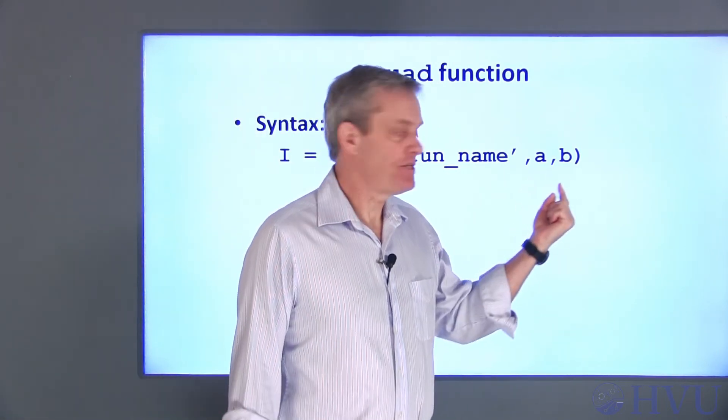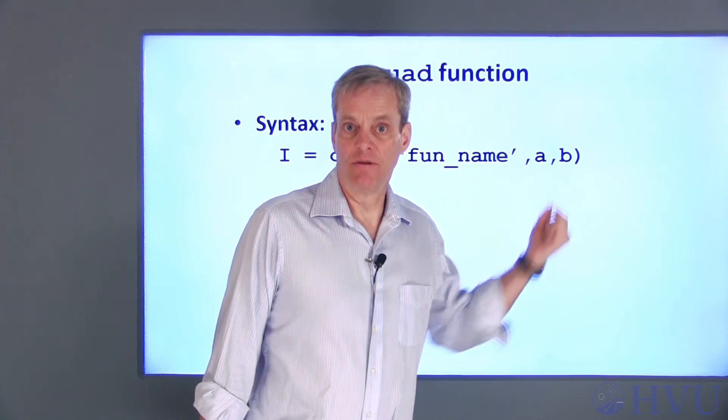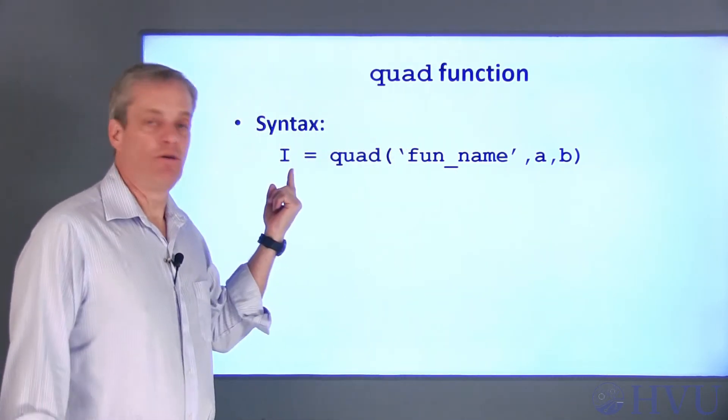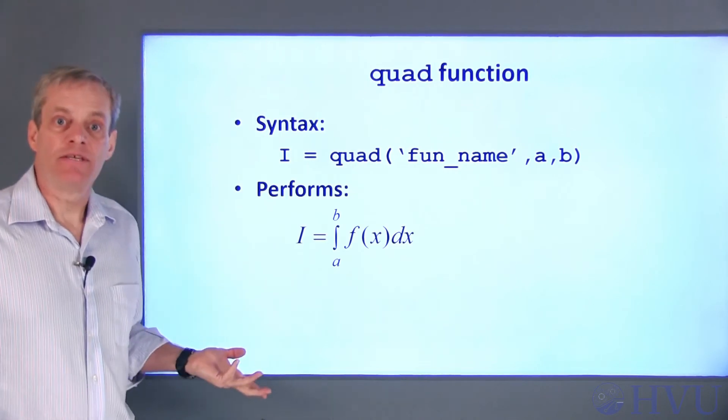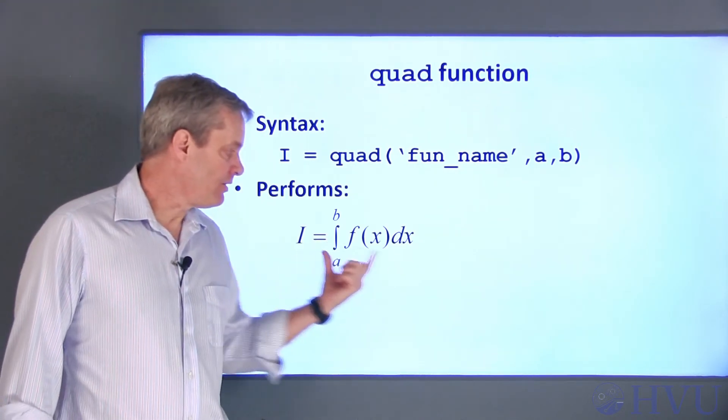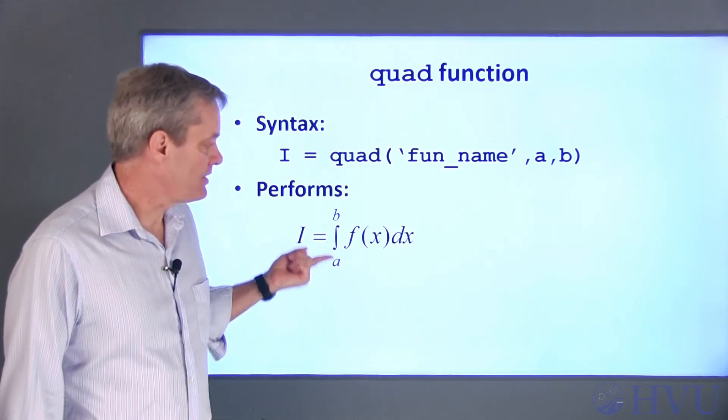A is the lower limit of integration, and B is the upper limit. Quad returns the integral, which I've assigned to the variable i. Symbolically, this syntax corresponds to the integral of f between the limits a and b.